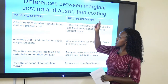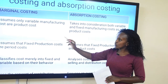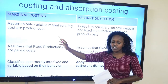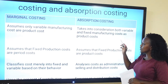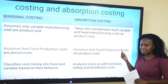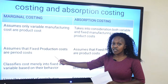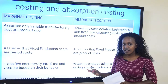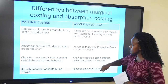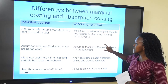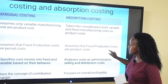To differentiate marginal costing and absorption costing, these are the key differences. Number one: while marginal costing assumes that only variable manufacturing costs are product costs, full costing or absorption costing takes into consideration both variable and fixed manufacturing costs as product costs. Number two: while marginal costing treats fixed production costs as period costs — expensed in total in the period incurred — in absorption costing, fixed production costs are treated as product costs and added to the cost of the product.